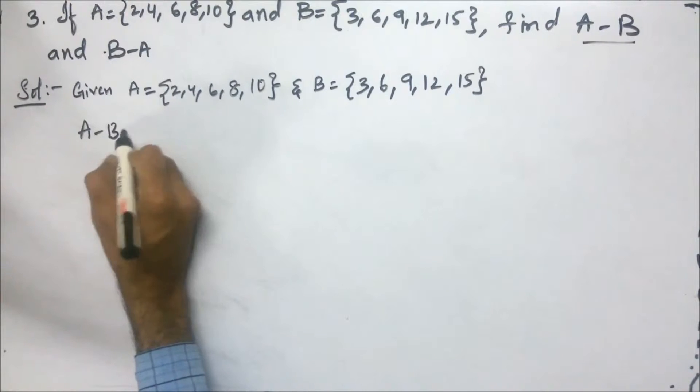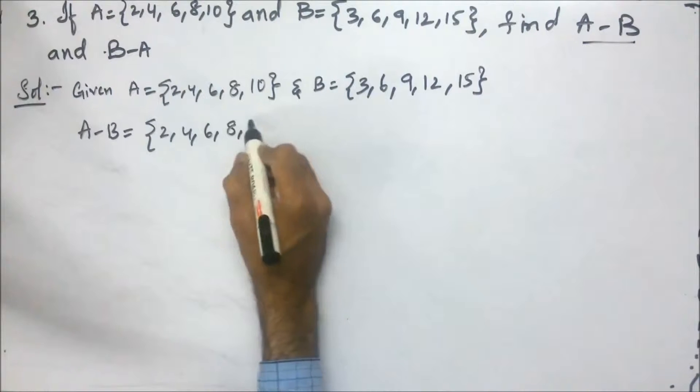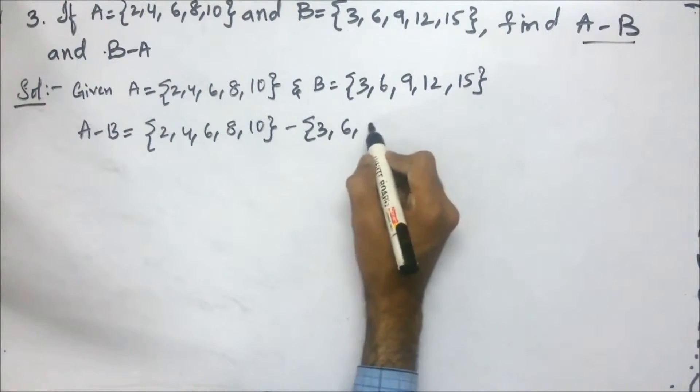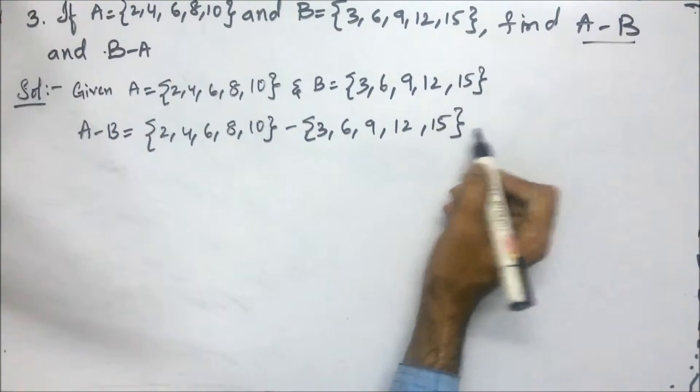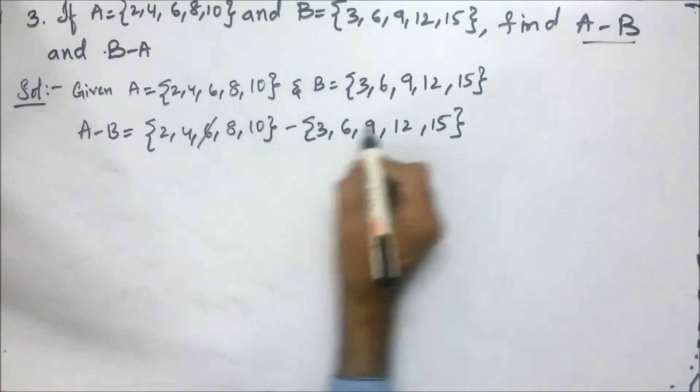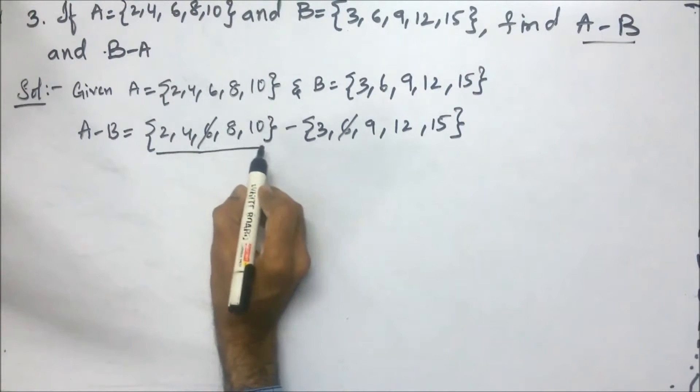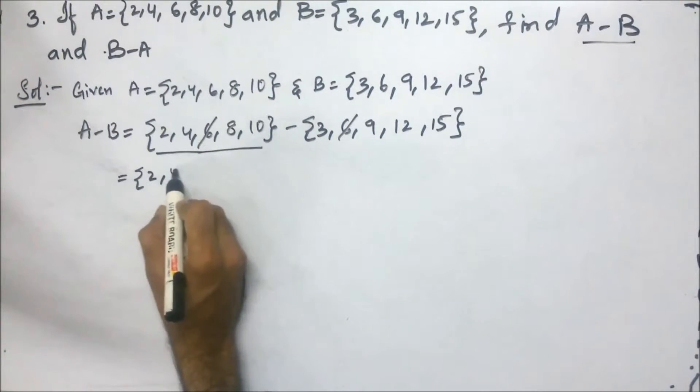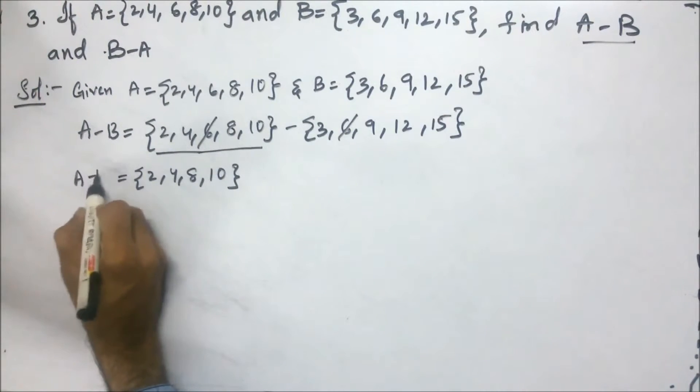A minus B equals 2, 4, 6, 8, 10 minus 3, 6, 9, 12, and 15. First, we will cancel the same elements which are present in these two sets. There is 6 and 6, and the left elements which are in the first set we will write. That is 2, 4, 8, 10. This is the answer of A minus B.